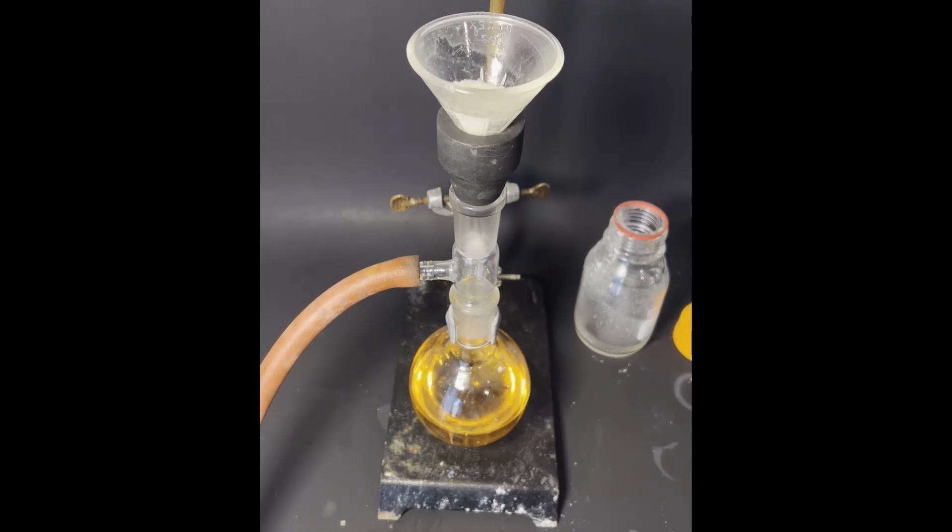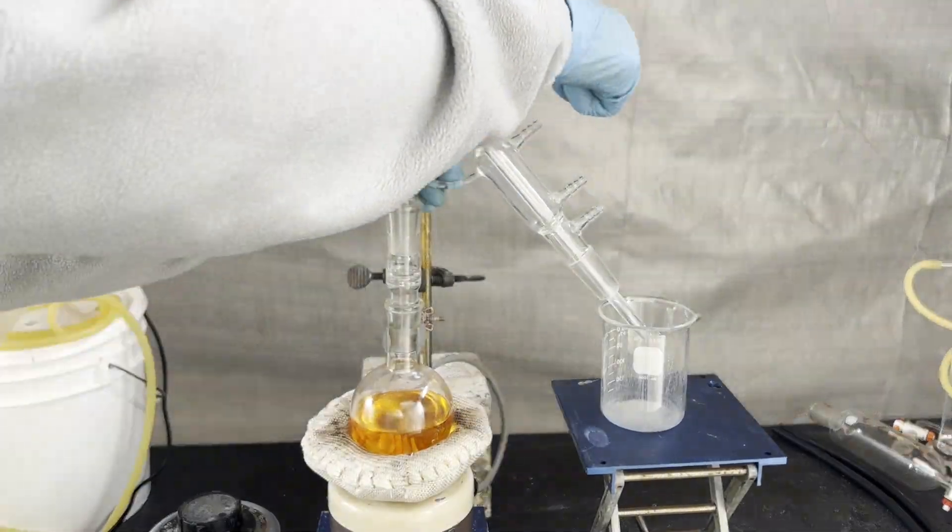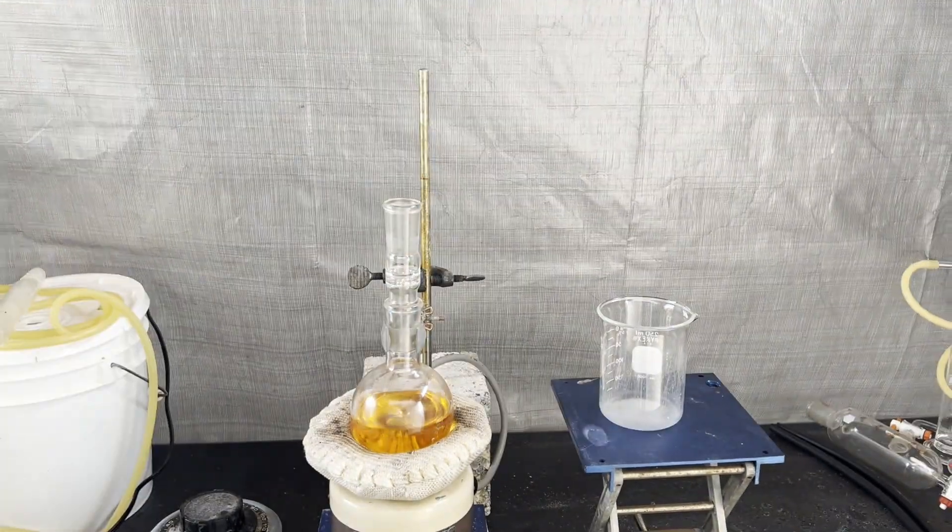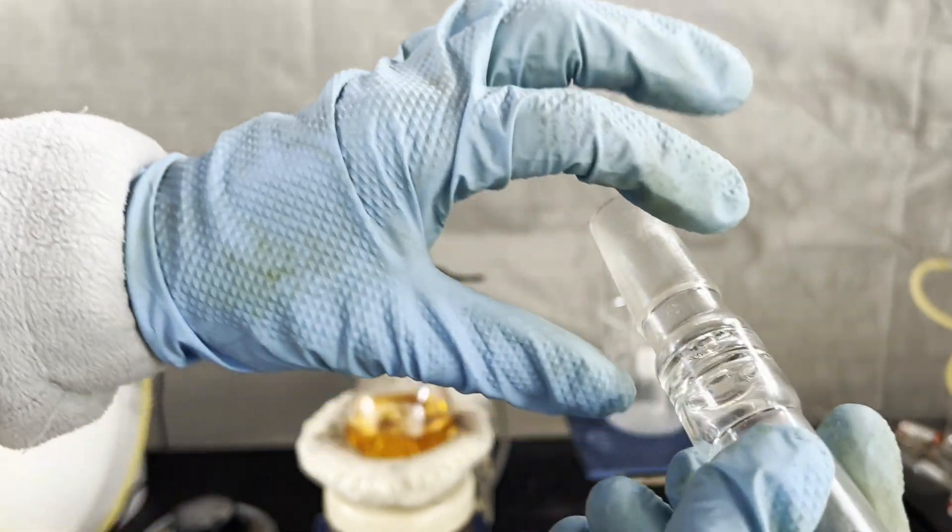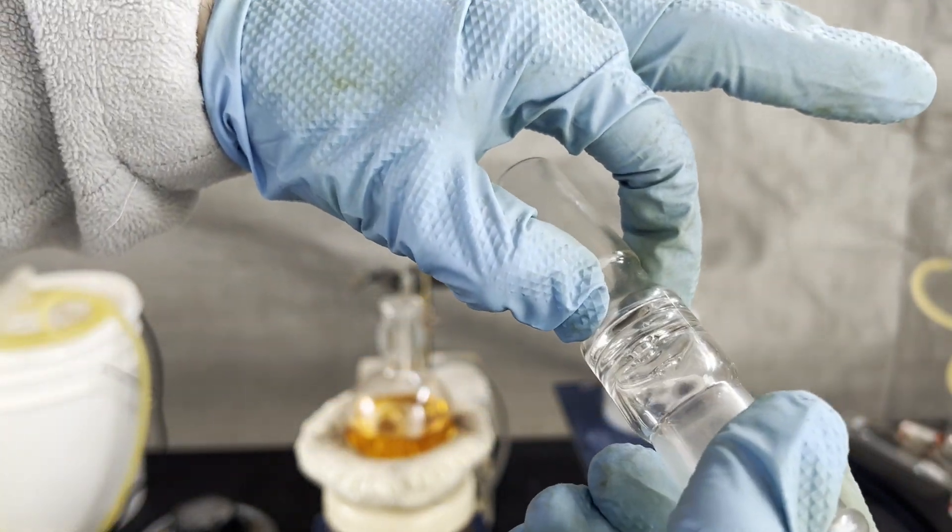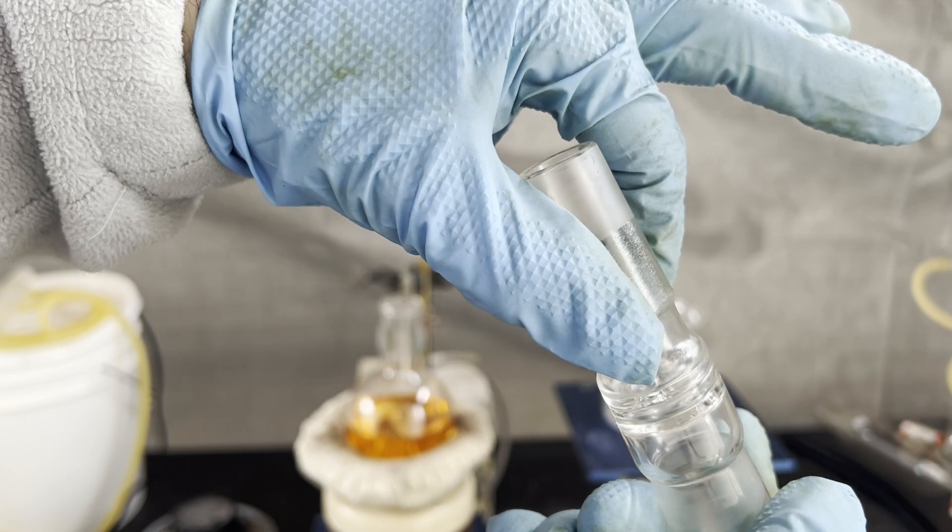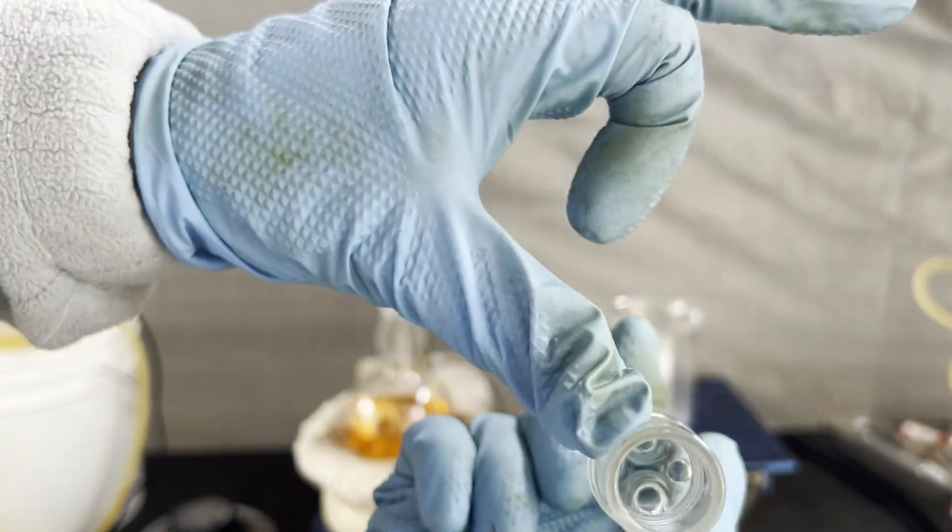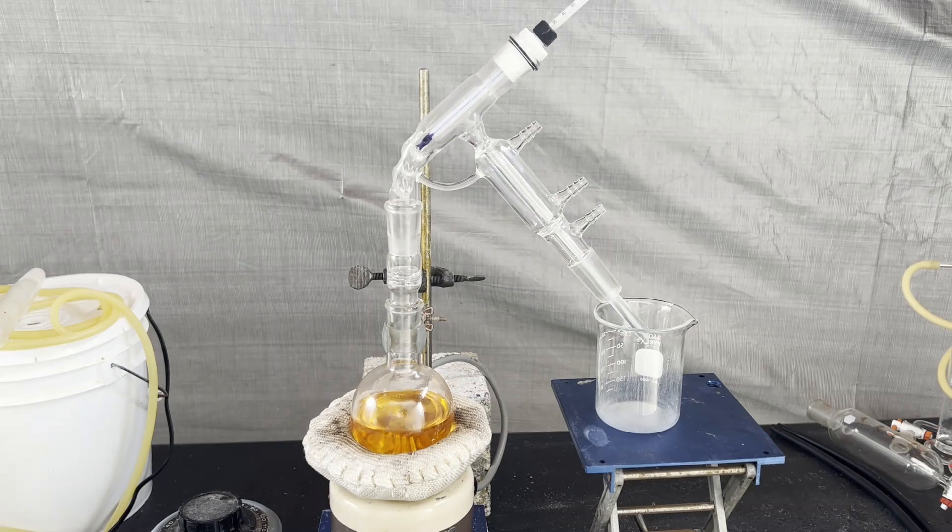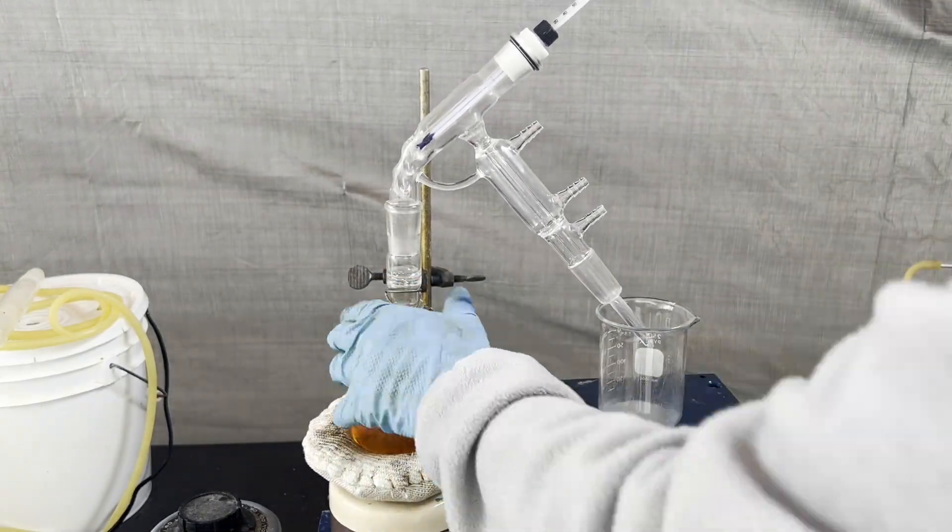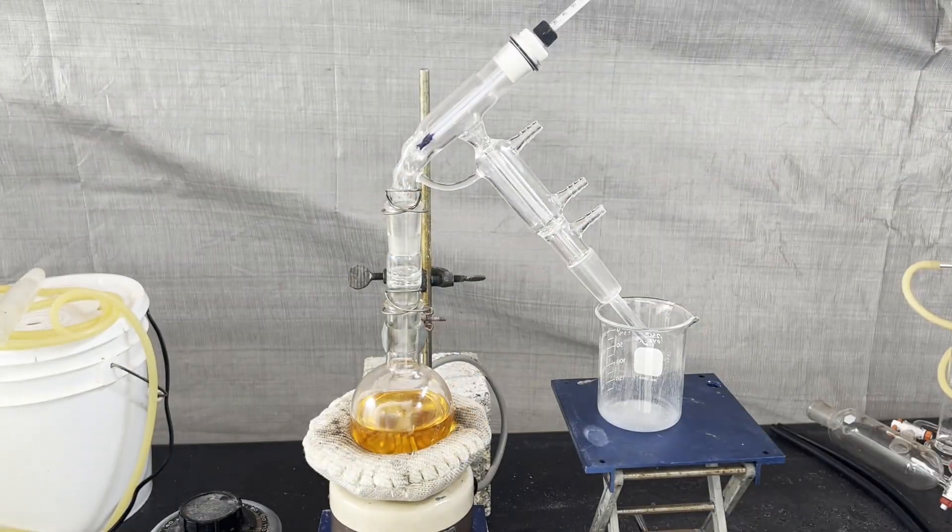I then used a separatory funnel to isolate the organic layer, dried it with anhydrous magnesium sulfate, and filtered it directly into the flask I'm about to distill from. A neat piece of glassware I own is this bump trap. It's a simple glass joint with two perpendicular two-holed circular glass discs fused into it. In the trial run, this distillation foamed a lot, which necessitated the use of a bump trap.